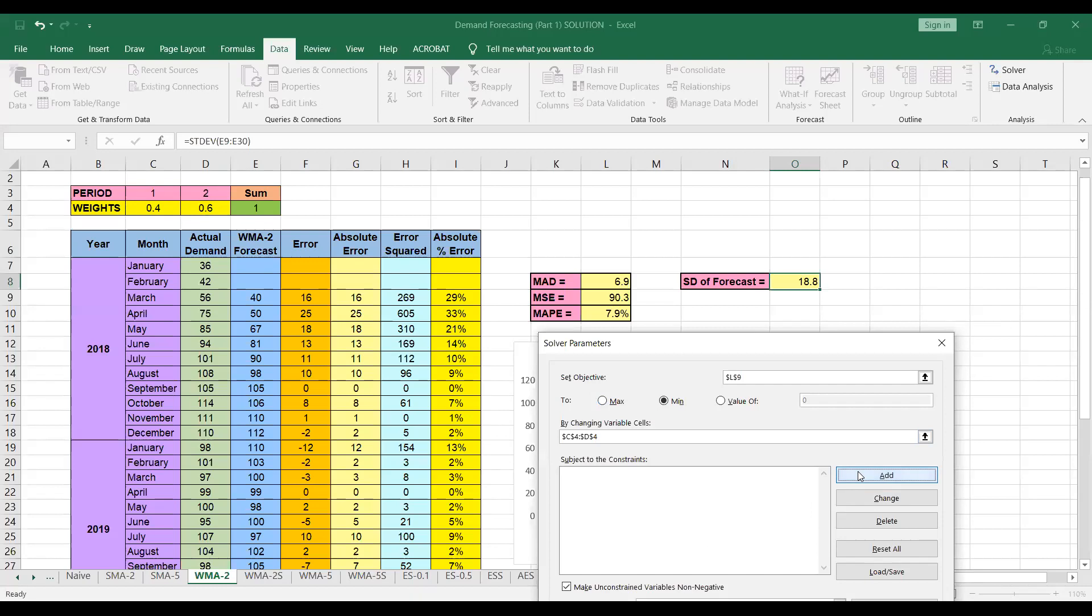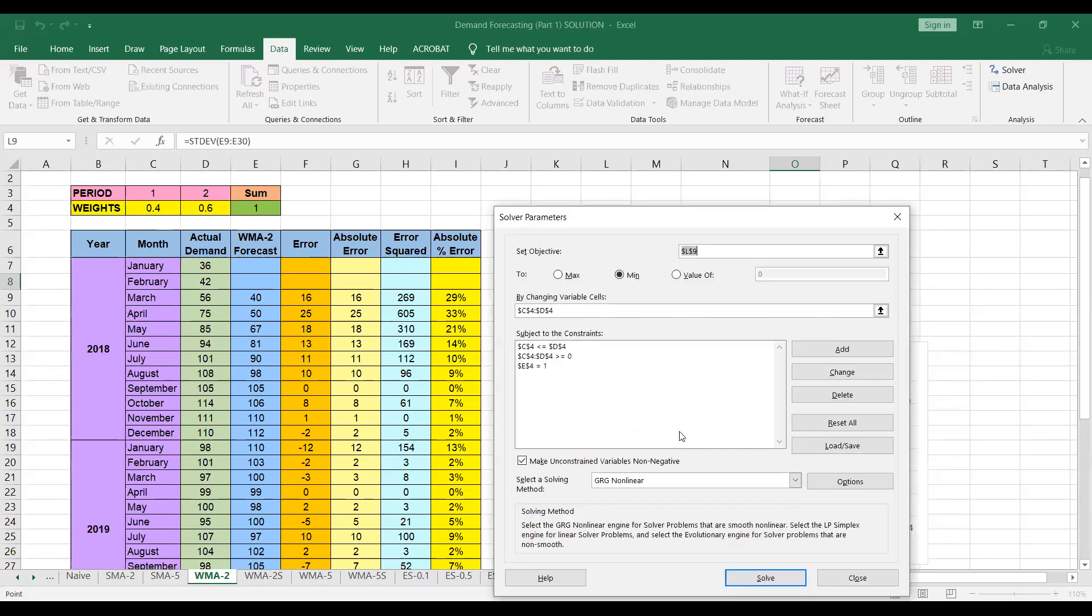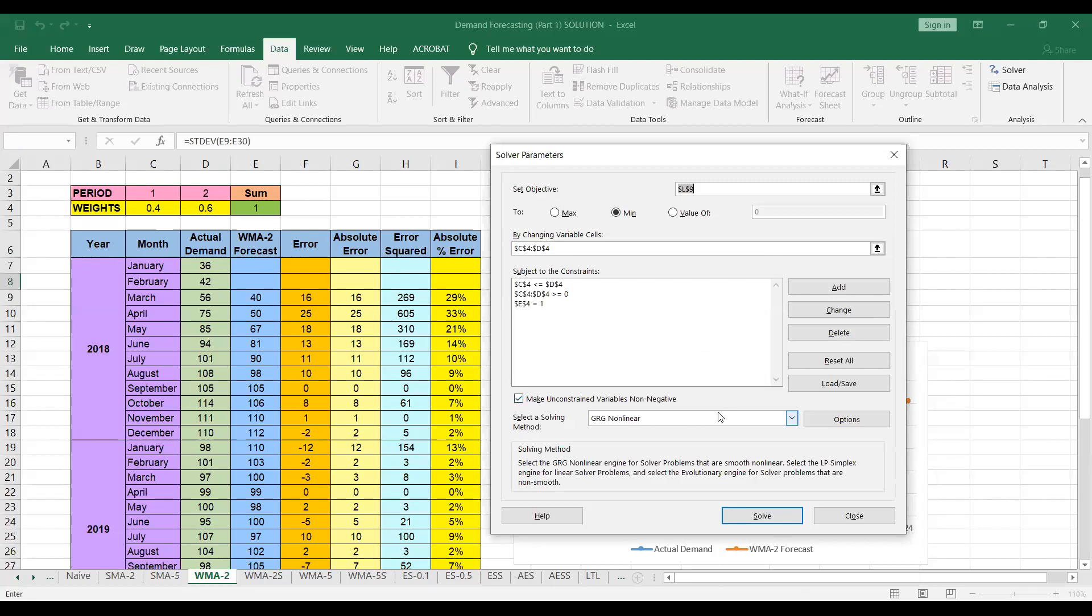So my first constraint is that this weight 0.4, I mean, whatever weight I get in this cell should be less than or equal to the weight in cell D4, W2. I added. Secondly, I want the sum of these two weights should be positive. So greater than or equal to 0. And then I want to optimize this function. So I have selected the objective function to be mean squared error. So that is nonlinear. And then I solve.